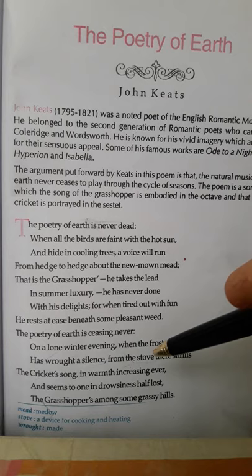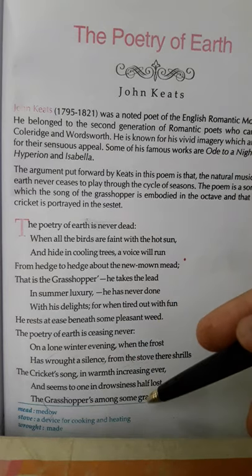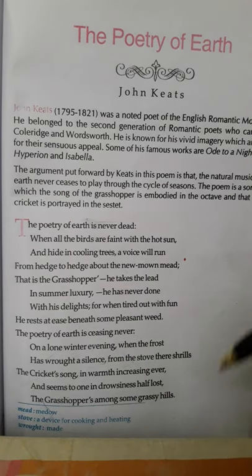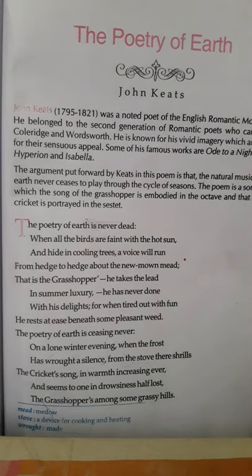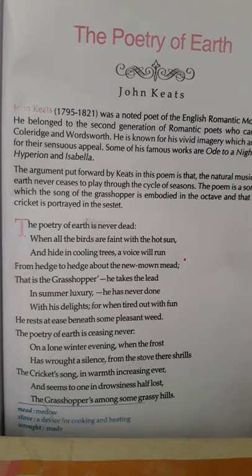Thus it proves that the music of earth never becomes silent. 'And seems to one in drowsiness half lost, the grasshopper's among some grassy hills.' In the warmth of the fireplace, if one is lost in drowsiness, the music of the cricket seems like a grasshopper's song sung among the grassy hills in summer, because the cricket's song is no less joyful than the grasshopper's. In this poem the poet wants to give a message that we can always be happy on this beautiful earth, as happiness is everywhere — we only have to find it. The excessive summer or the severe winter symbolizes the hard or rough times of our life, but like the earth we have to find our happiness even in those severe moments and remain satisfied always.